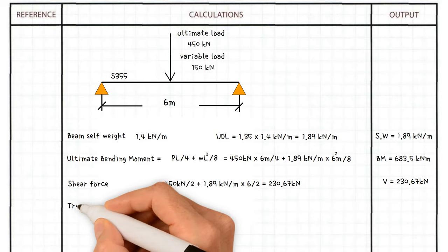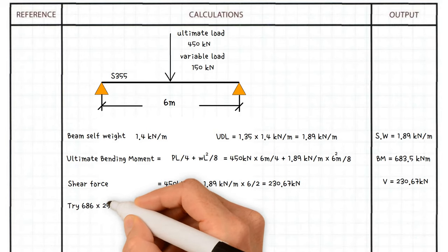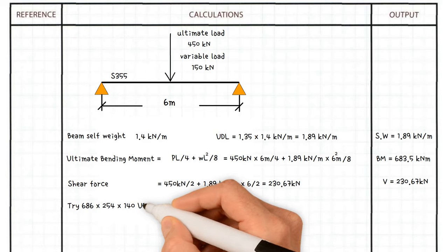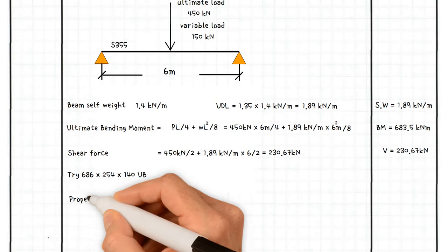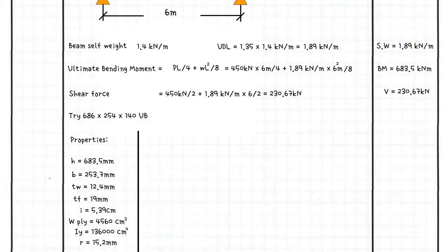Let's try 686 by 254 by 140 UB steel beam, which has the following properties. But first, we are required to determine the classification of the beam section.